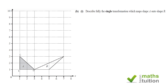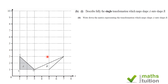Here we go. This part says: describe the single transformation which maps shape A to shape B. Shape A is triangle CDE with given values as shown. It also says: write any matrix representing the transformation which maps shape A onto shape B.